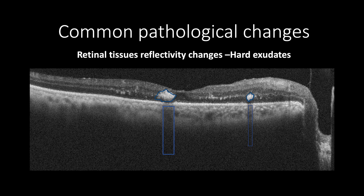In contrast, the hyperreflective dots found in cases of diabetic macular edema, macular edema related to retinal vein occlusion, and age-related macular degeneration are a sign of an inflammatory process due to activated microglia, which are usually small and don't cast any shadow.